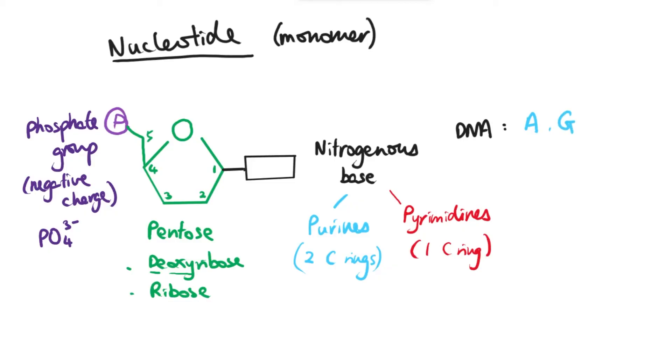We've got adenine and guanine which are both purines, and also cytosine and thymine which are both pyrimidines. Whereas in RNA it's quite similar as well. RNA also contains adenine and guanine as their base. They will also have cytosine, but RNA molecules do not have thymine, they have uracil instead of thymine.